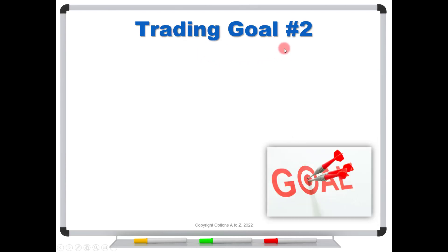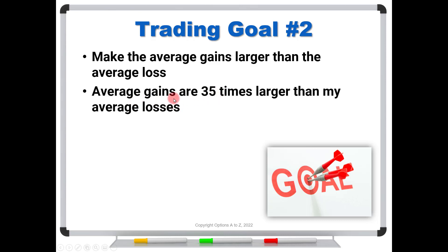So what about Trading Goal Number Two? Well, this is related. And traders will sometimes say, I want to make the average gains larger than the average loss. So now we're saying, I don't really care if I have the majority of winners, let's say above 50%. In fact, I might only win 30% of the time. But if I can have my average gains being far larger than the average losses, then hey, everything's good and I will make money. So as an example, a trader might say, I want my average gains to be 35 times larger than my average losses. This might be a goal. And again, this is a very bad idea.